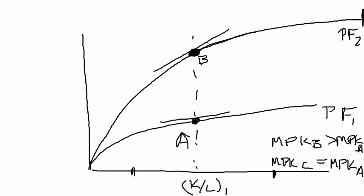If you think about what that principle says — holding everything else constant, such as the level of technology — as you add more and more capital goods, the marginal product of capital declines. So if you start off at point B and you start adding capital goods, the principle of diminishing marginal returns applies. As you start moving up along your production function, the marginal product of capital is going to start decreasing. That means if you want to find point C such that the marginal product of capital at point C is the same as it is at point A, you're going to have to end up at a point like this.